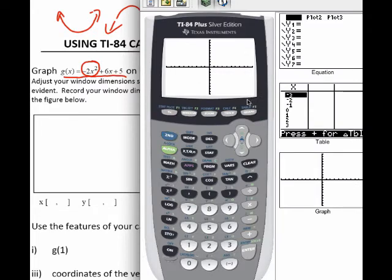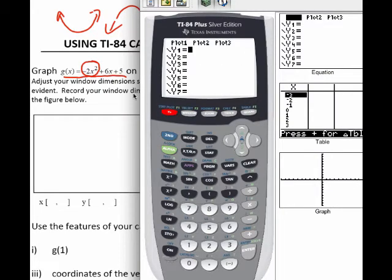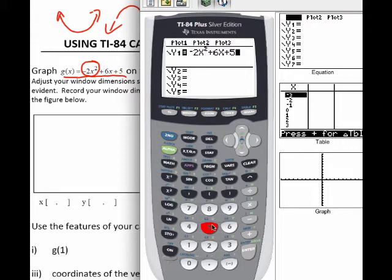So over on my calculator here, I'm going to go to y equals up on this menu. And I'm going to type in my equation negative. The negative button is down below here. Don't use the subtract button or you'll get an error. Negative 2x squared, plus 6x, plus 5. And I'm going to graph this.